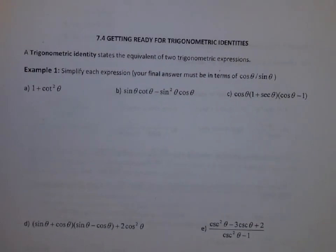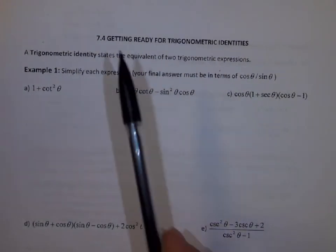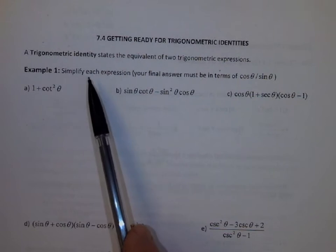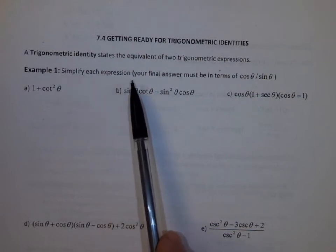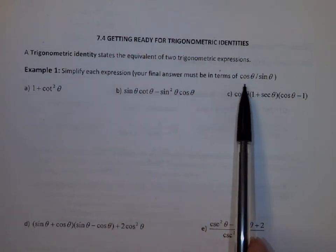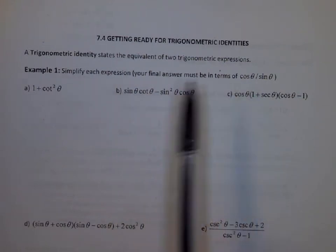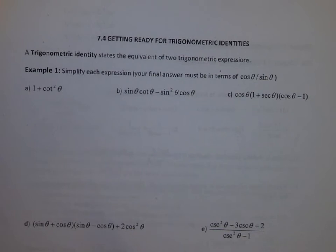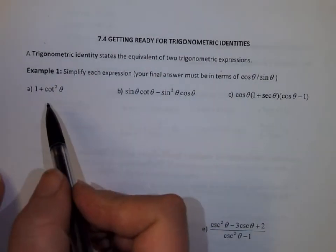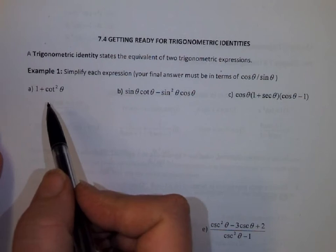So we're simplifying these expressions. The question says: simplify each expression. Your final answer must be in terms of cosine theta and sine theta. The first one is 1 plus cotangent squared theta.